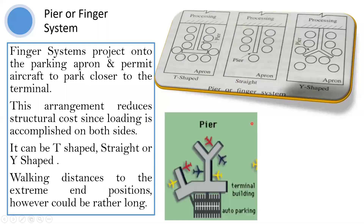The next is the pier or finger system. Finger system piers project onto the parking apron and permit aircraft to park closer to the terminal. This arrangement reduces structural cost since loading is accomplished on both sides. It can be a T-shape, a straight, or a Y-shape. Walking distances to the extreme end positions however could be rather long. The aircraft are parked here and from the terminal building you will have access.